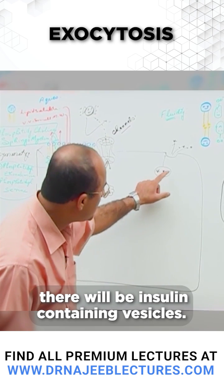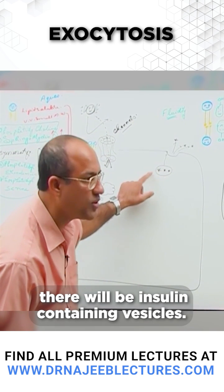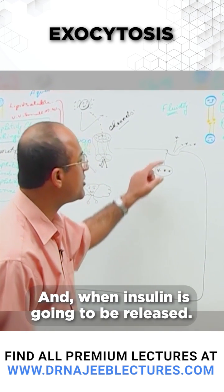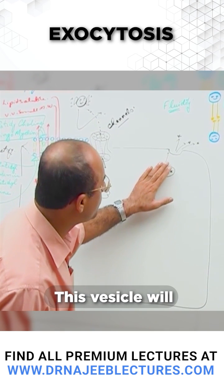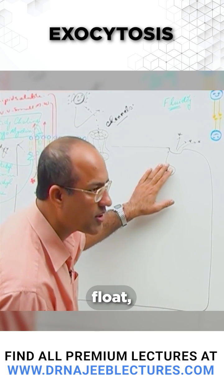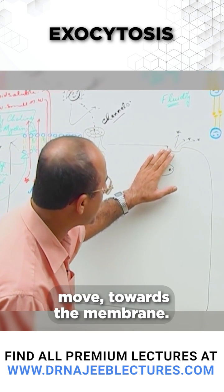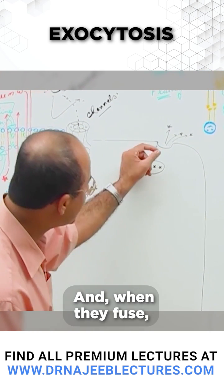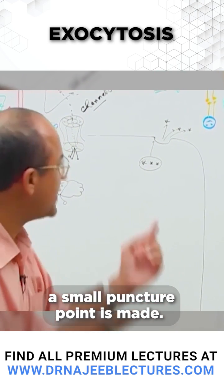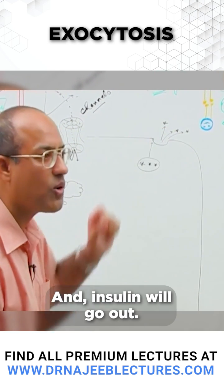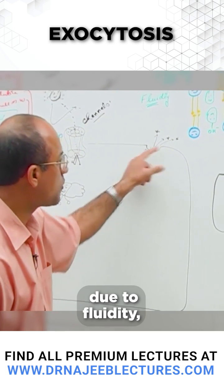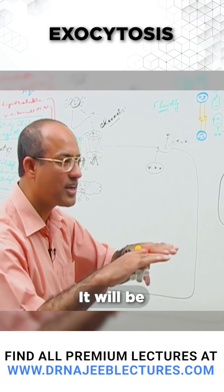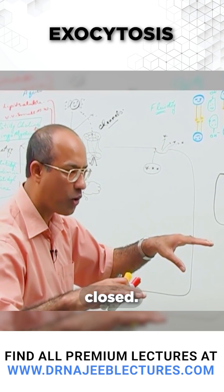If it is a pancreatic cell, there will be an insulin-containing vesicle. These vesicles are membrane-bound, and when insulin is going to be released, this vesicle will float and move towards the membrane. The membrane of the vesicle will fuse with the cell membrane, and where they fuse, a small puncture point is made and insulin will go out. Then, due to fluidity, it will seal and be completely closed.